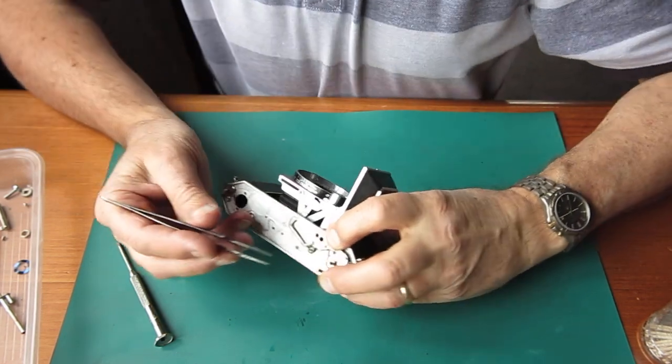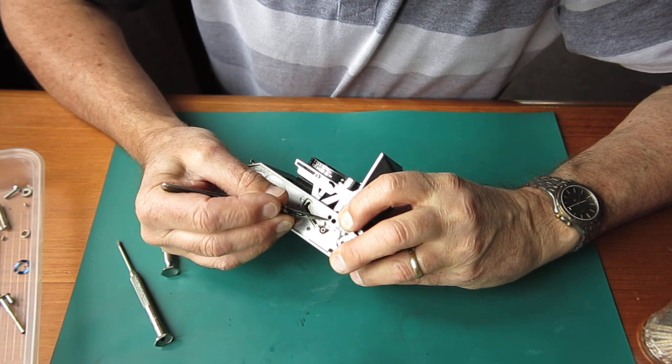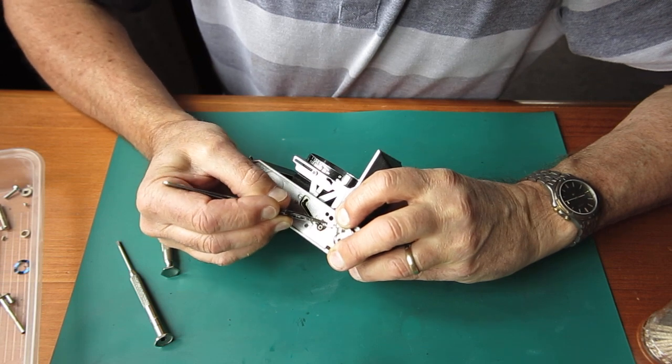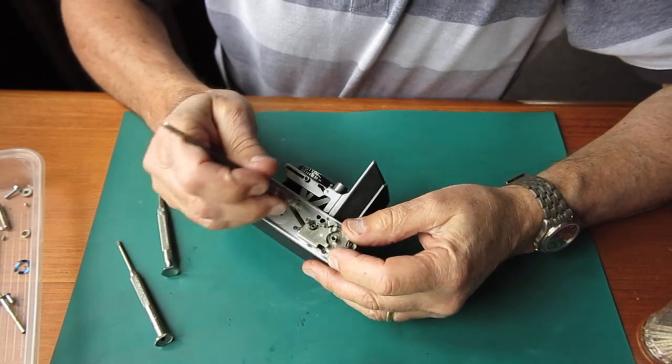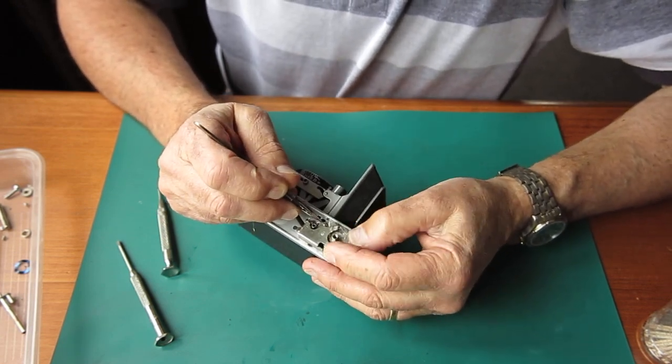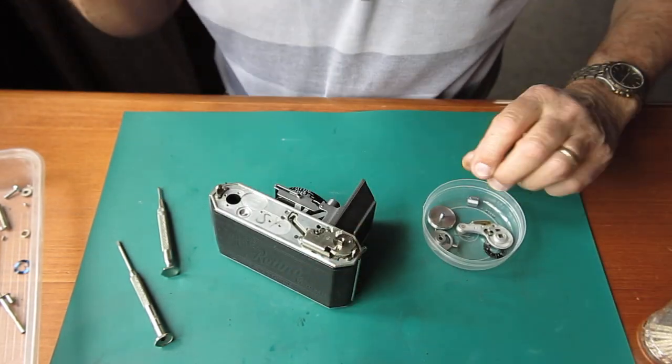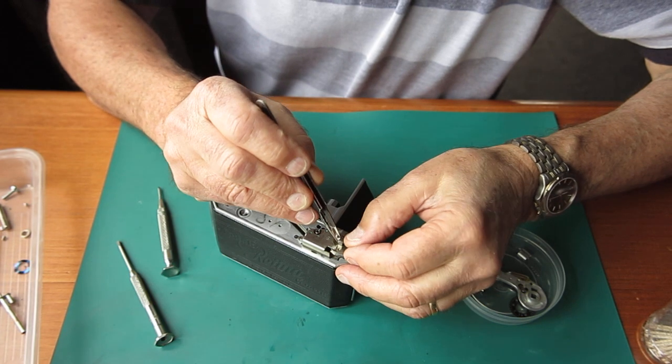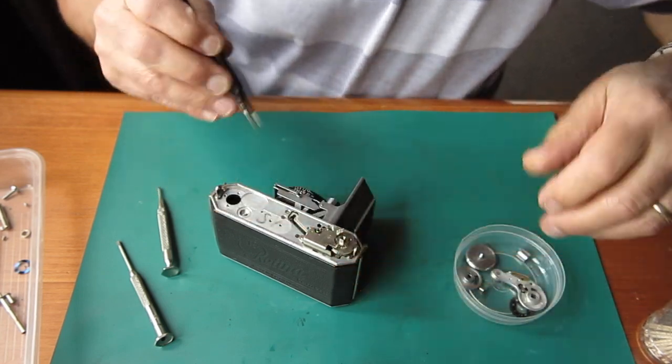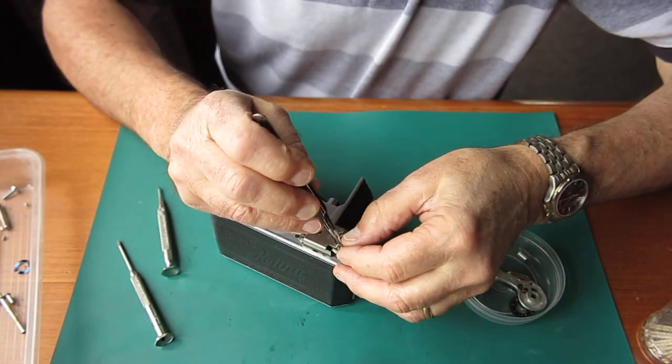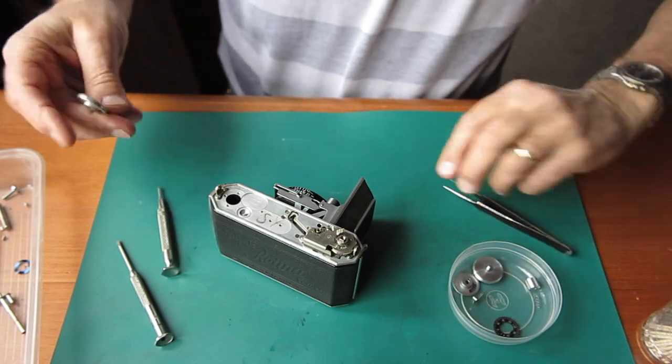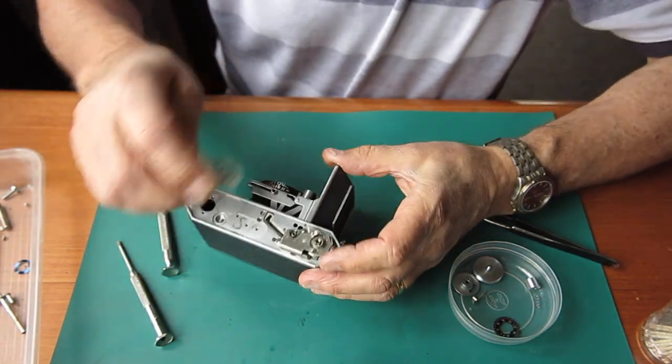And that spring goes behind that pawl so it flicks the pawl, the end of the pawl out, effectively pushing this end of the pawl in. Now if I want some tension on that film advance, let's put the gear in place. The spacer that sits on that, the spacer's present on the 2A's but not the 1A's.